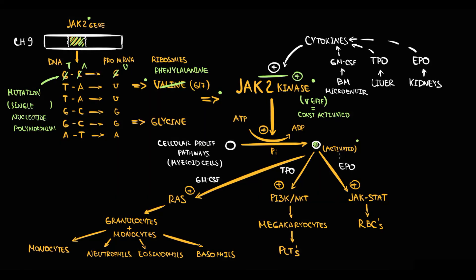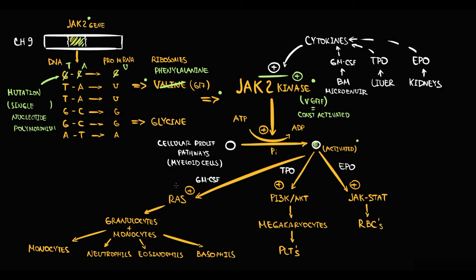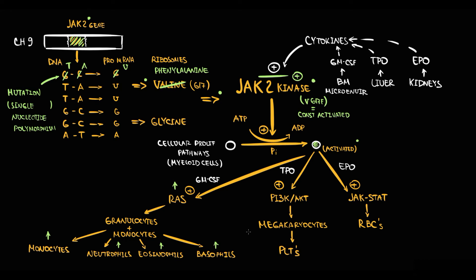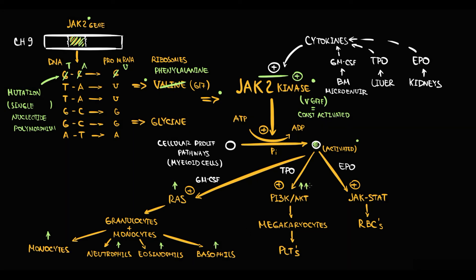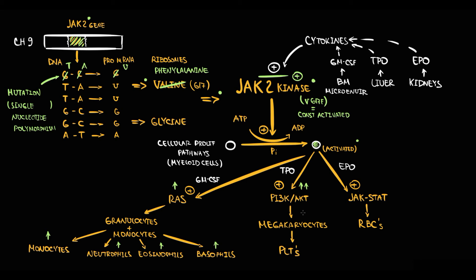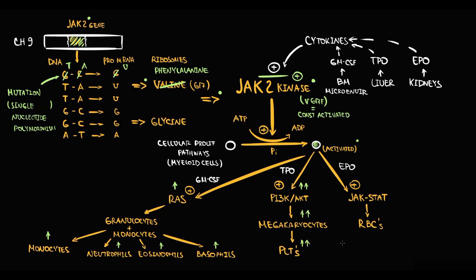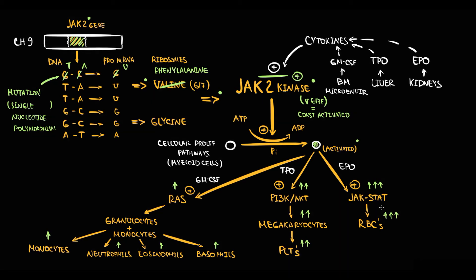Interestingly, this mutation causes disproportional activation of intracellular pathways. The mutated JAK2 kinase causes mild activation of the RAS pathway, resulting in a mild increase in production of monocytes and all granulocytes, particularly basophils. It causes moderate activation of the PI3K-AKT pathway, resulting in a moderate increase in megakaryocytes and thereby platelet production. The most significant activation occurs to the JAK-STAT pathway, resulting in a huge increase in red blood cells. So up to this point, this is basically the pathogenesis of polycythemia.